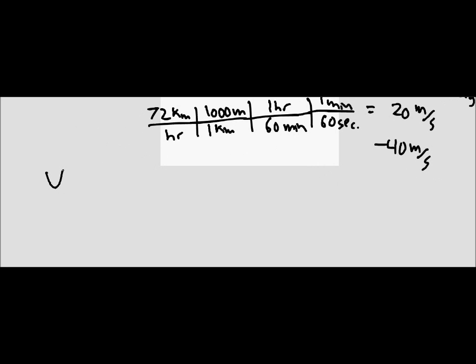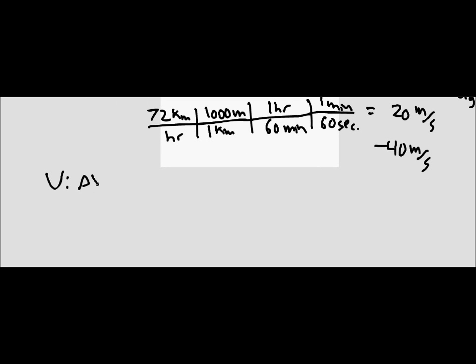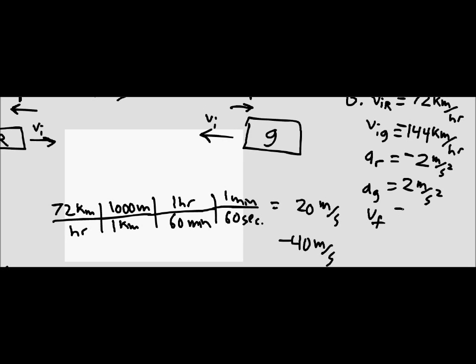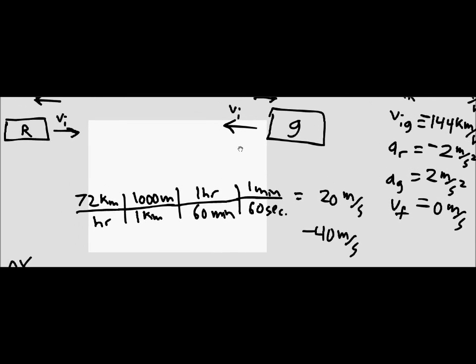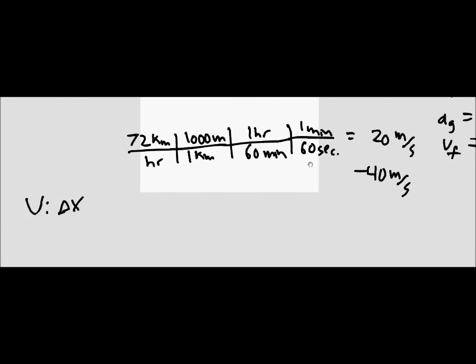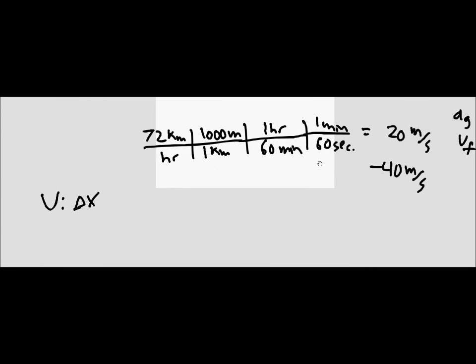Our unknown for each train is the change in x as it's slowing to a stop. We can say that the final velocity is zero meters per second for both trains. What we're going to do is find the distance each train travels as it slows to a stop, then subtract those distances from nine hundred fifty meters to find either if they collide, if it's a negative number, or the distance between them if they don't.